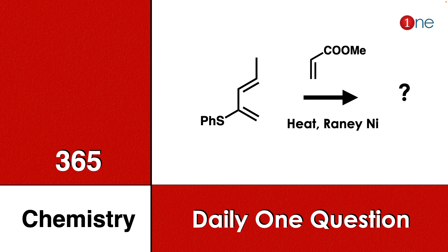Welcome to One Chemistry. This is the 365 Chemistry Series — one daily question for you. Here you have a conjugated diene with a thiophenyl side chain, reacting with an alkene ester, and you are heating it under Raney Nickel conditions. You have to find what will be the final product.